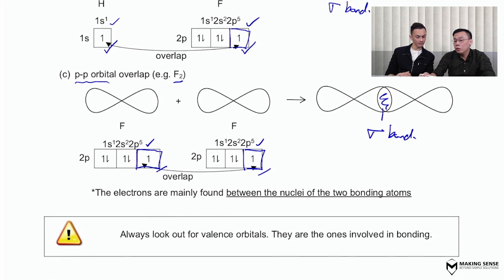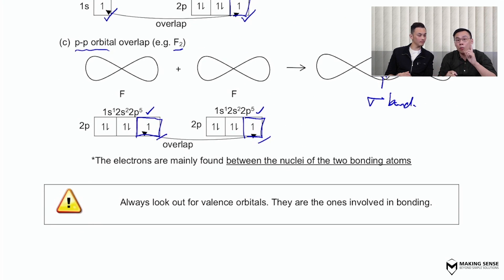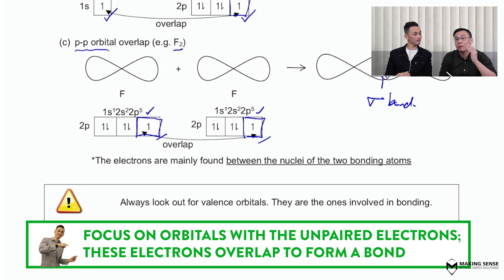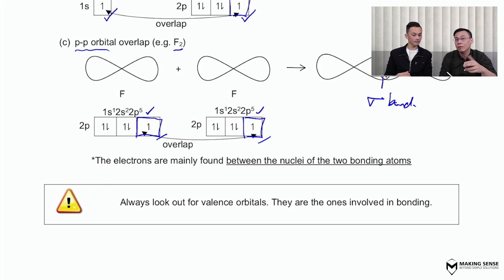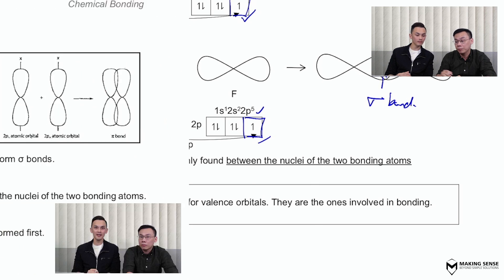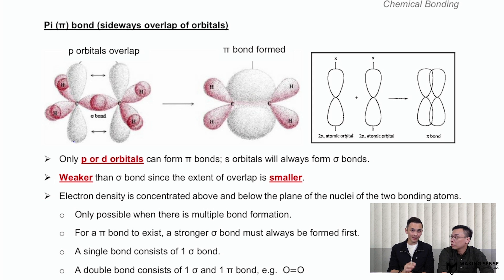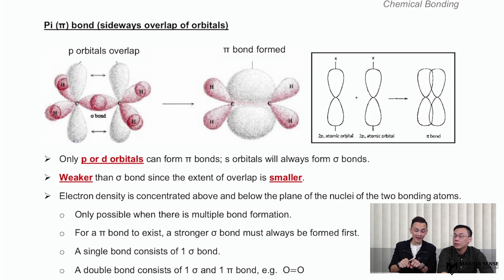In deducing what types of orbitals are involved in forming a sigma bond, the focus is always on the valence orbital, because the valence orbital contains the valence electrons and valence electrons are always the ones involved in bonding. So Mr. Yap, we are done with sigma bonds. Let's bring them through the second type of bonding, which is pi bonding — a side-on overlap or side-on car crash.